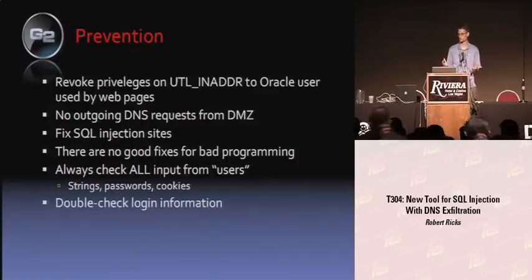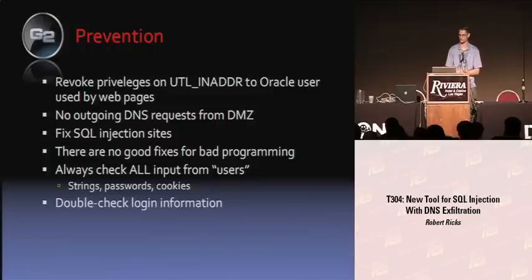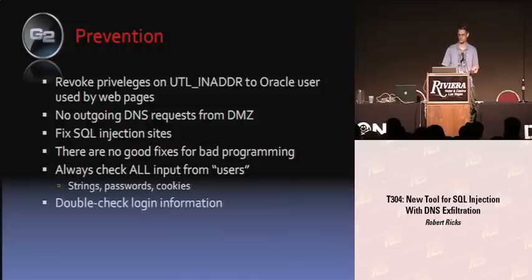What can people do to prevent this sort of attack? An easy thing is to revoke privileges on UTL_INADDR for the user your web application connects as. That will solve this particular problem, though it won't solve timing or change-in-page attacks. You should also set up your DMZ so it's not making DNS requests, since that won't be useful to you anyway. But the most important thing is fixing those SQL injection vulnerabilities in the first place — you just can't fix bad programming with patches all the time.